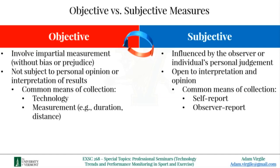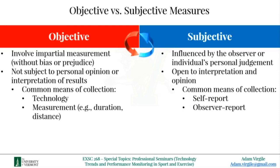In those examples we touched on the two primary subjective measures collected in sport: self-report and observer report. The coach examples were observer report, whereas the athlete examples were self-report, because the athlete is reporting information about themselves while the coach was reporting information about the athlete. As you might expect, self-report are measures that someone reports about themselves, whereas having a coach fill out an RPE form about an athlete would be an observer report.